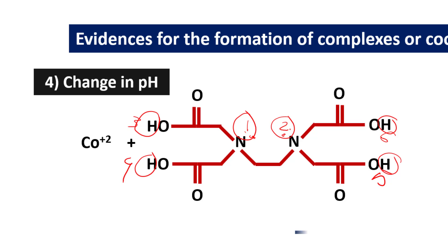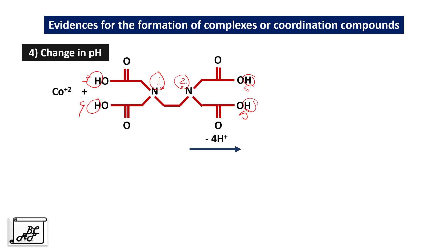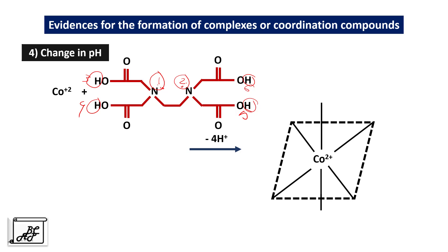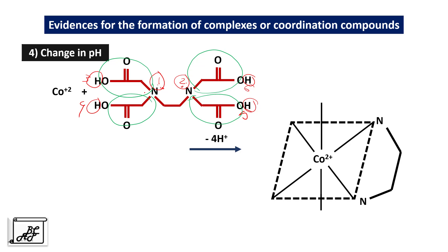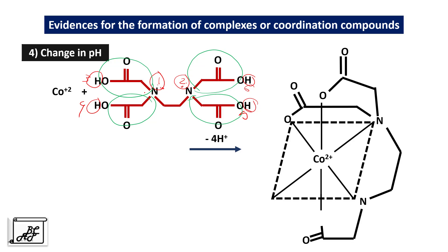When EDTA is added to the cobalt solution, four hydrogens are lost. Cobalt is at the center with octahedral coordination, and the two nitrogen atoms are arranged accordingly. There are four acetate groups in EDTA, and these acetate groups arrange themselves to bind the cobalt atom very firmly from all six positions. In this way, EDTA holds the central cobalt atom and releases four hydrogen ions, increasing H⁺ ion concentration and decreasing the pH of the solution. This change in pH indicates the formation of a coordination compound.